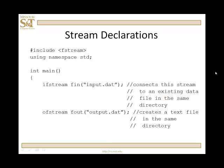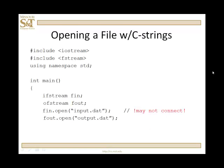Likewise, ofstream fout("output.dat") creates a text file in the same directory. Now, this isn't the best way to do things. Another way is to use the open() function — this is a member function of the class of objects to which fin and fout belong: ifstream and ofstream. So open() is a member function of those types, and you're asking C++ to connect the stream fin to the existing file input.dat.